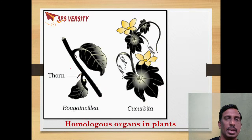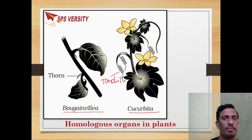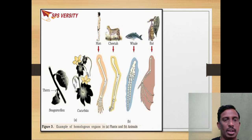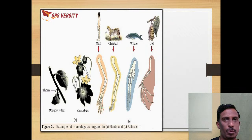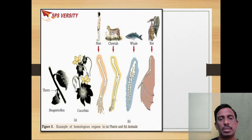For example in plants: thorns of bougainvillea are meant for protection, while tendrils of cucurbita are meant for climbing — both come from axillary buds, but their function is different. Another example of homologous organs: the forelimbs of man, cheetah, whale, and bat all have the same humerus, radius-ulna, metacarpals, carpals, and phalanges — all have the same types of bones, but functionally they are different.